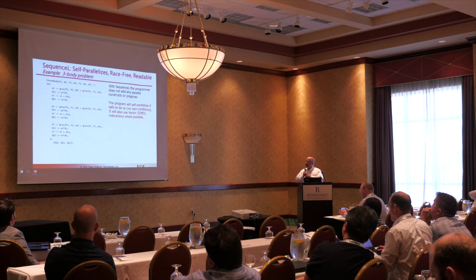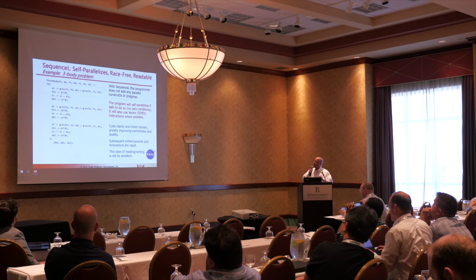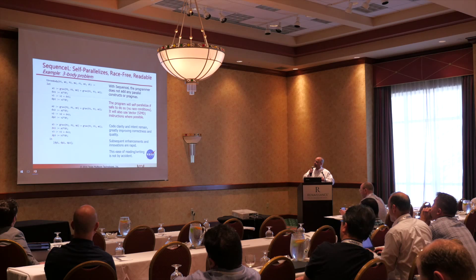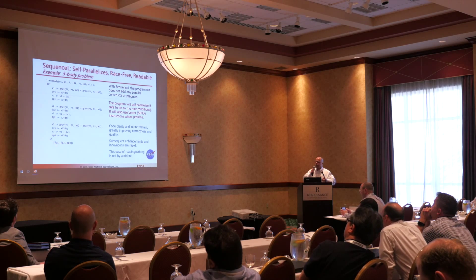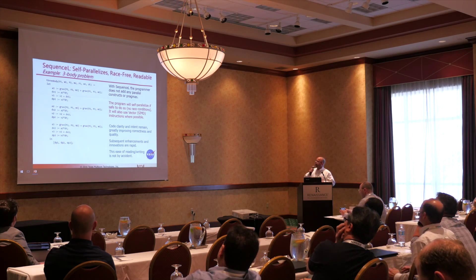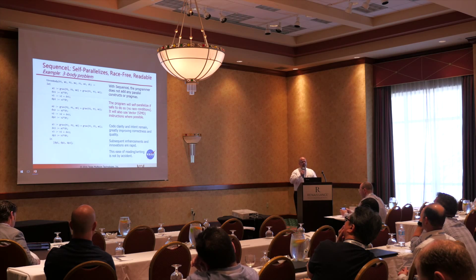How would we do this in Sequence L? You have a function call — three-body — and it identifies each variable in a let-body. The let-body defines what the variables are, and then you have the final answer in the end part, producing the new position for each of the three bodies. The Sequence L compiler can go through, look at this, and identify parallel parts on its own — it doesn't need human input. It will also use vector instructions wherever possible, giving you optimally running software without the programmer having to specify any of this.